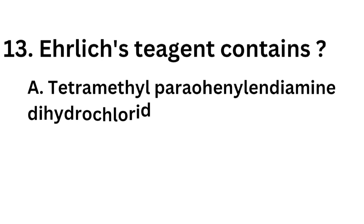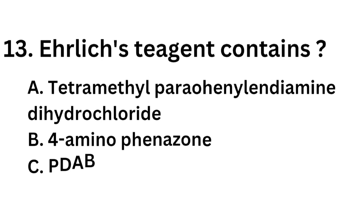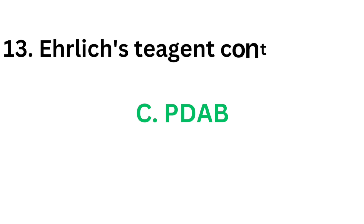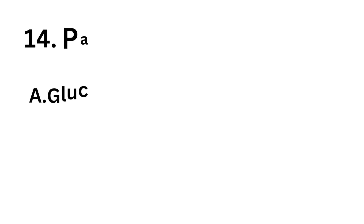Question number thirteen: Ehrlich reagent contains — option A: tetramethyl paraphenylenediamine dihydrochloride, option B: 4-aminophenazone, option C: paradimethylaminobenzaldehyde, option D: both A and C. Ehrlich test is used for detection of urobilinogen, and the reagent used is paradimethylaminobenzaldehyde (PDAB), so the correct answer is option C.